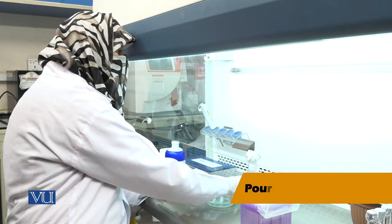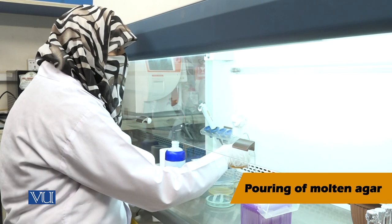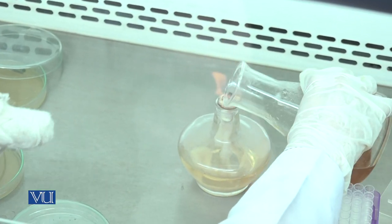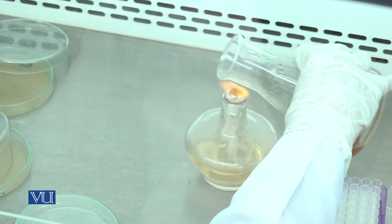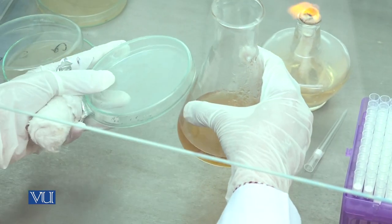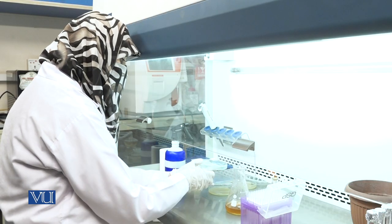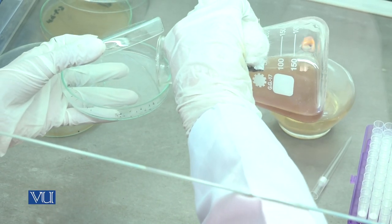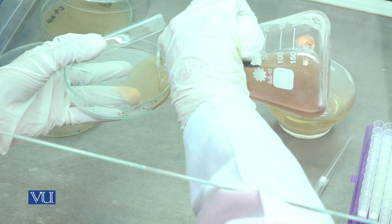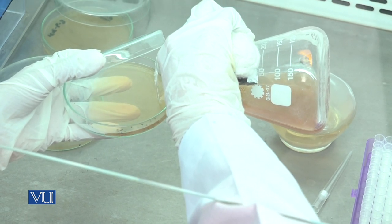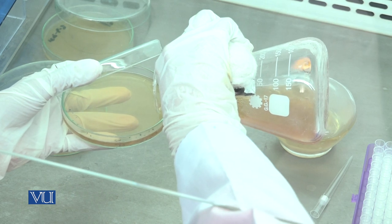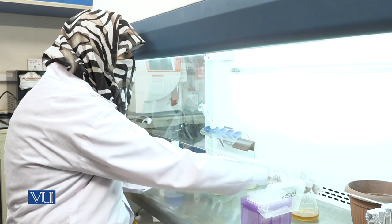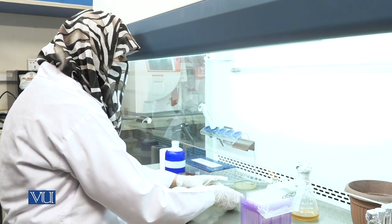Now, pour melted agar on inoculated plate. For this, sterilize the mouth of flask and pour melted agar uniformly on plate. According to recommendation, it is preferable to fill the plate to 12 to 15 ml.